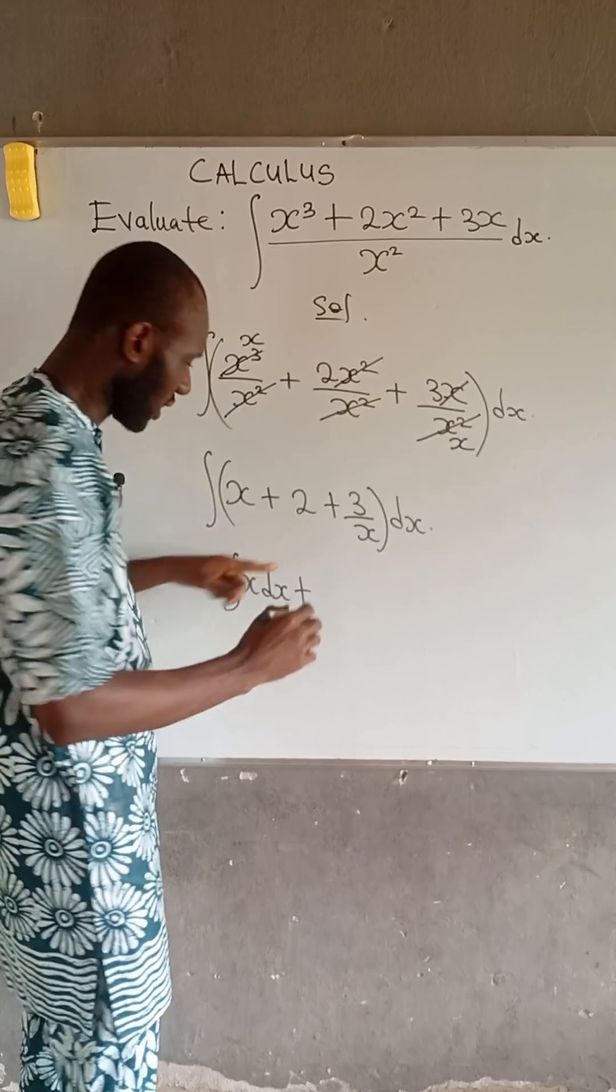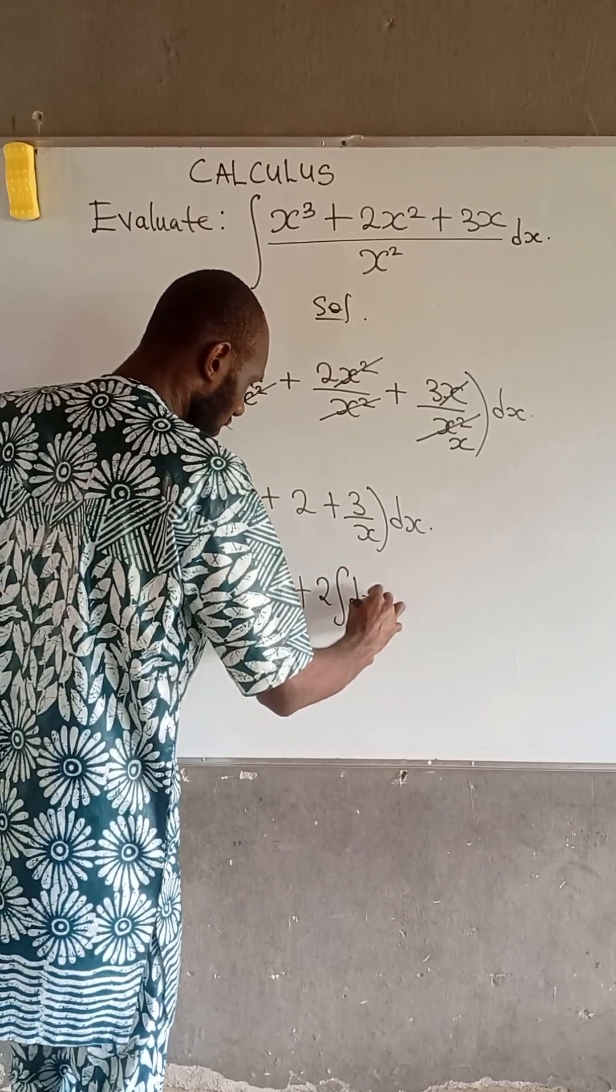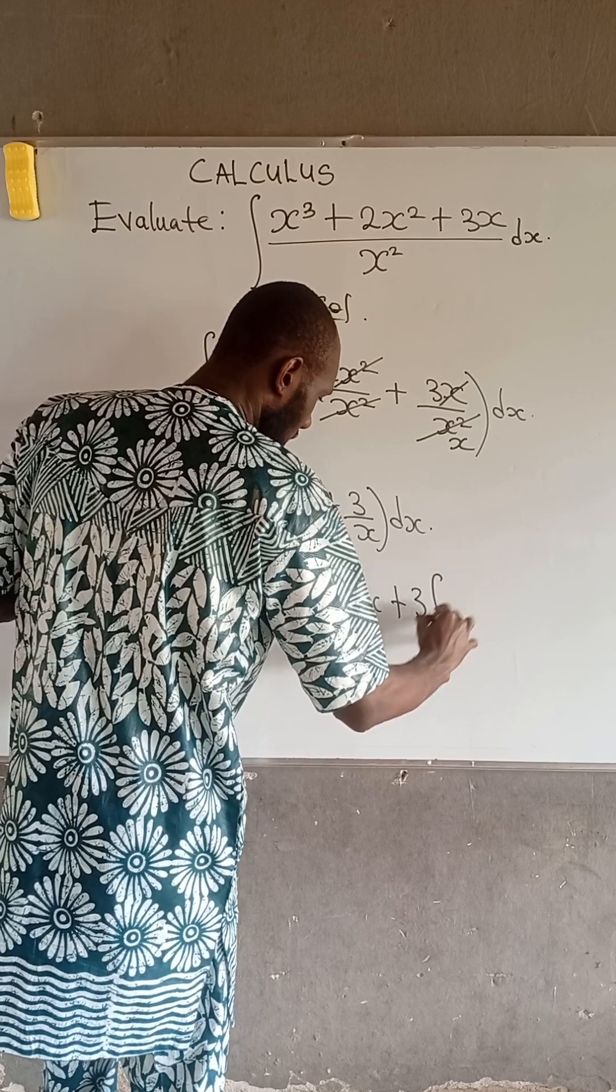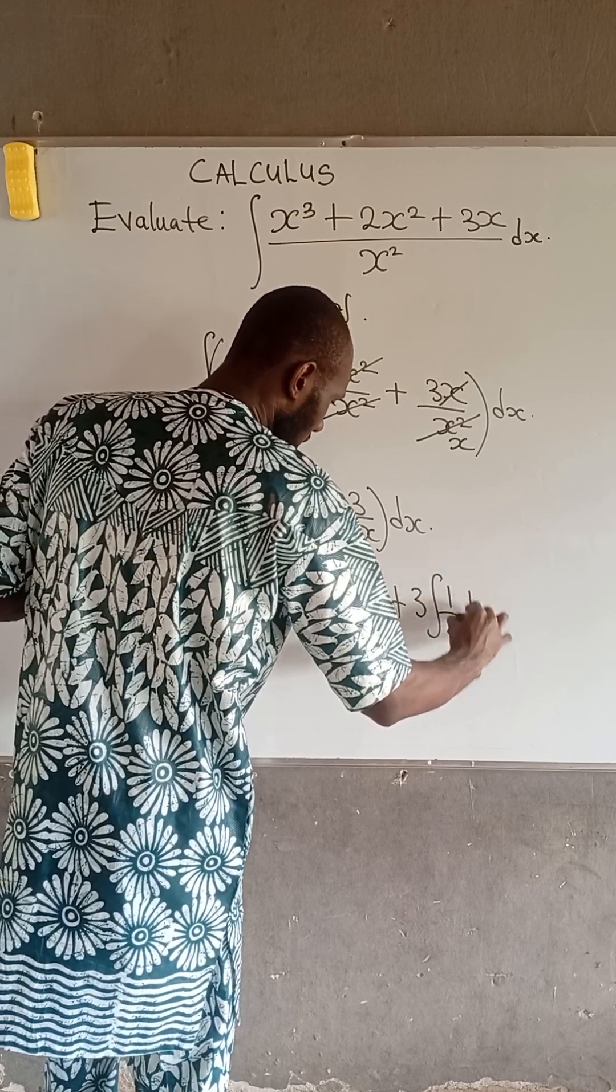since 2 is a constant, it becomes 2, integral of dx plus 3, integral of 1 divided by x dx.